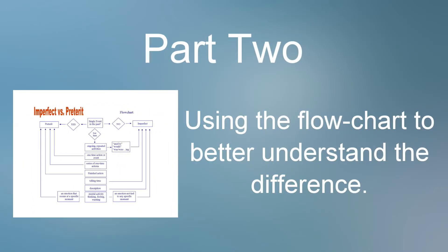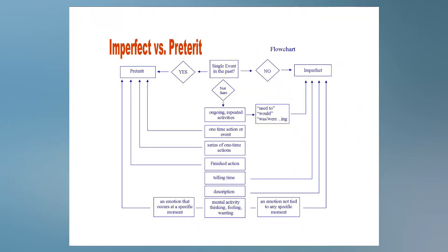If you have a good understanding of how the two tenses are conjugated, it is time to delve more deeply into their different uses. To make that less difficult, the Atahos notes packet includes a flowchart that clearly guides students through their choices of either the preterite or the imperfect. If you are able, take out the Atahos packet now and turn to the imperfect vs. preterite flowchart, or you may view it on the screen.